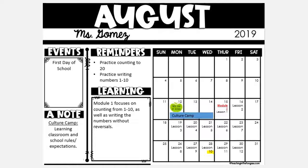Please have them practice writing their numbers 1 through 10. I've also included an insert with numbers 1 through 20 — have them trace with an Expo marker. That's why they're in a sheet protector, so your student can practice in the car or over the weekend. This is going to set them up for success.